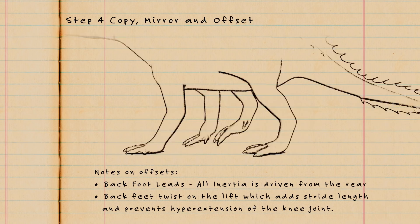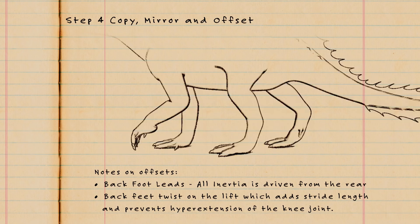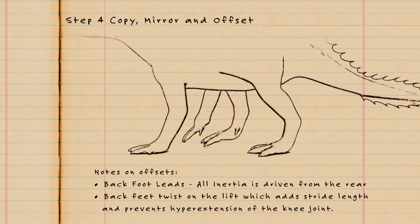Now some notes on the offsets. As I said before, in a quadruped, the back feet lead. Also, the back feet will often twist on the beginning of the lift phase, which gives the leg further length and prevents hyperextension in the knee joint.